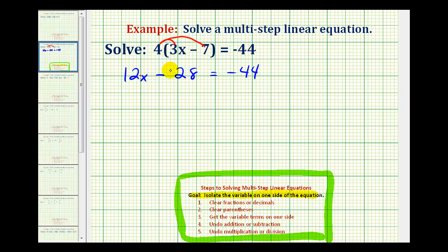So to undo minus twenty-eight, we'll perform the opposite operation to both sides of the equation. Well, the opposite of minus twenty-eight would be plus twenty-eight. So we'll add twenty-eight to both sides of the equation.